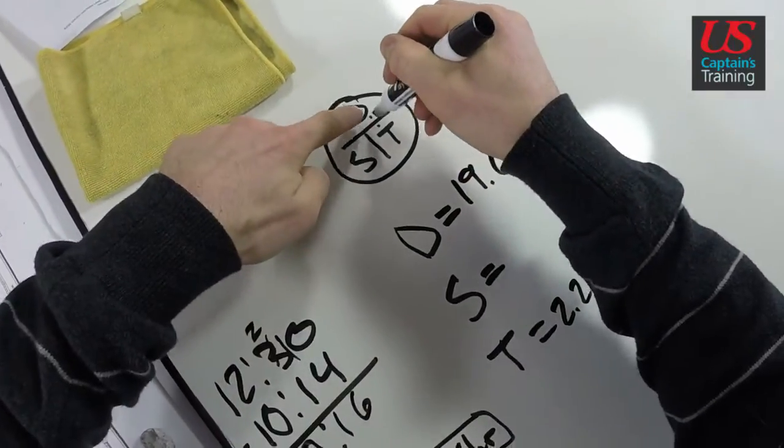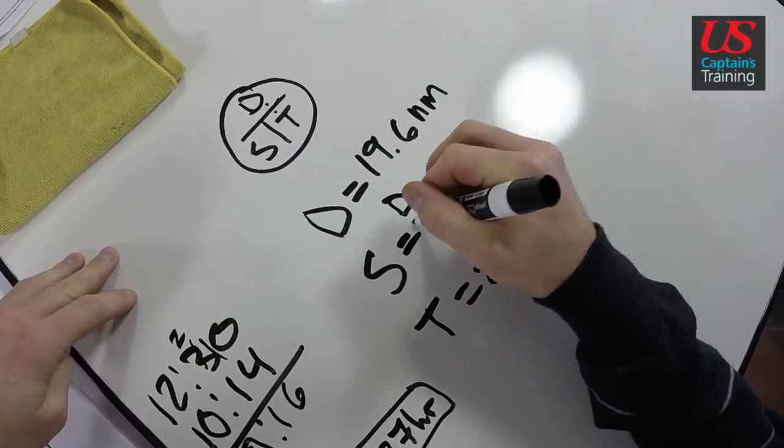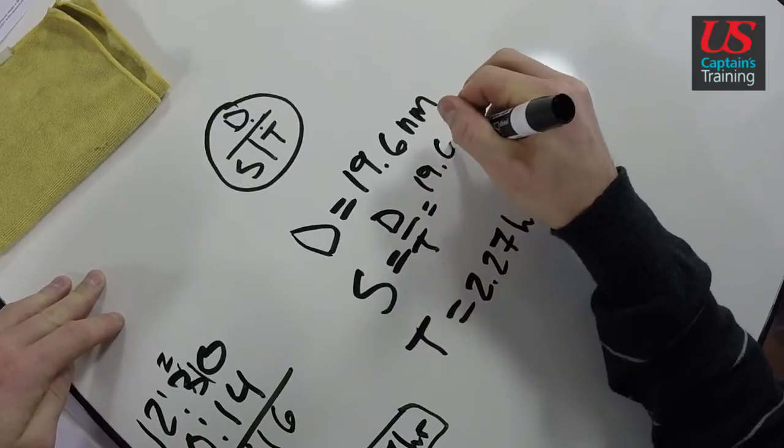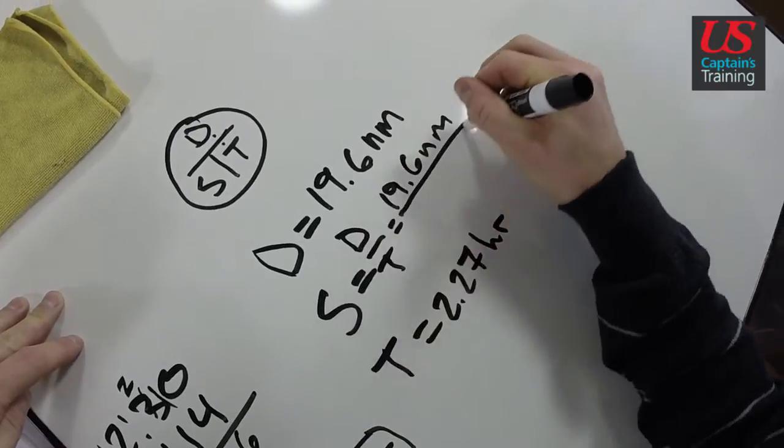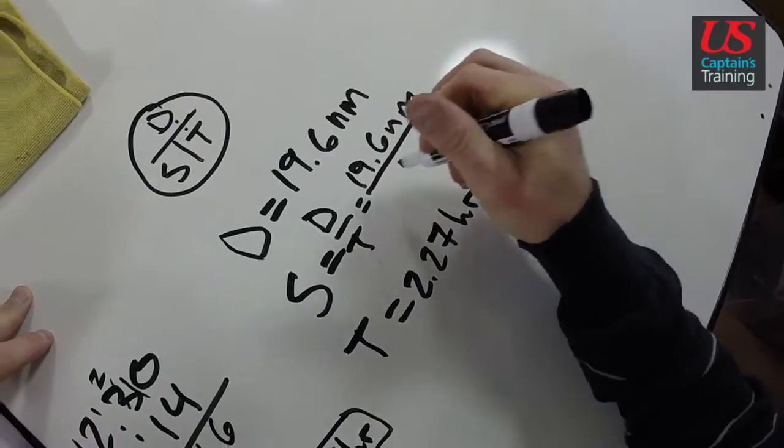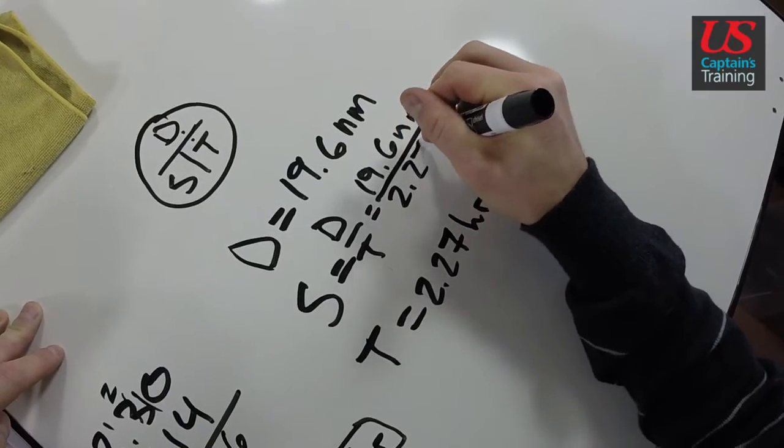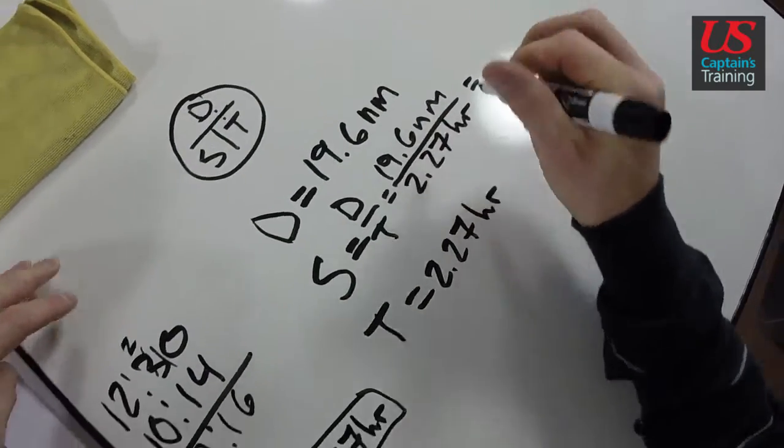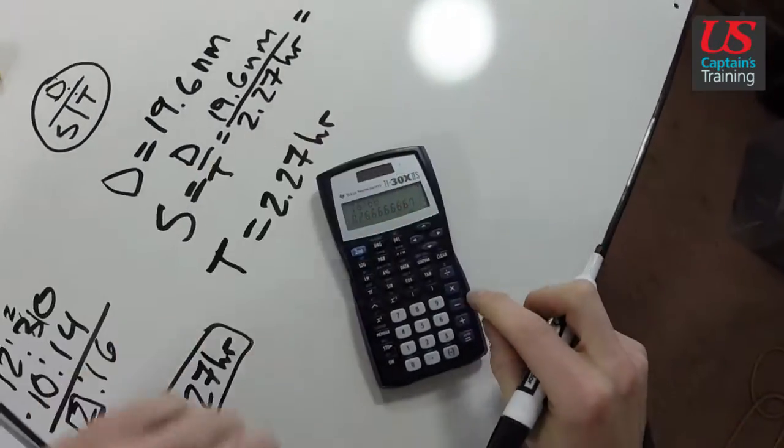Speed is equal to distance divided by time. Distance divided by time equals 19.6 nautical miles divided by 2.27 hours. We'll get out the calculator.